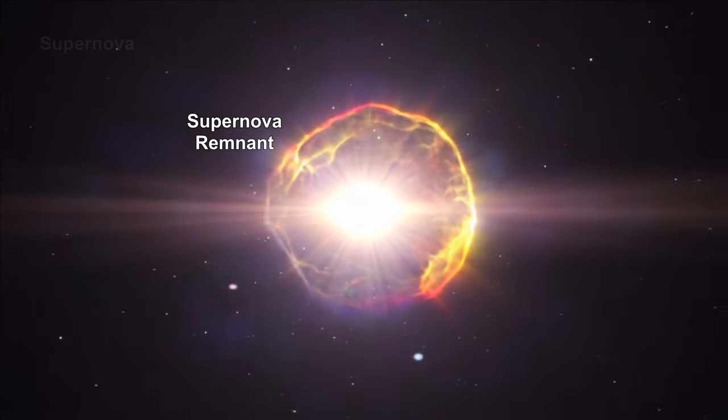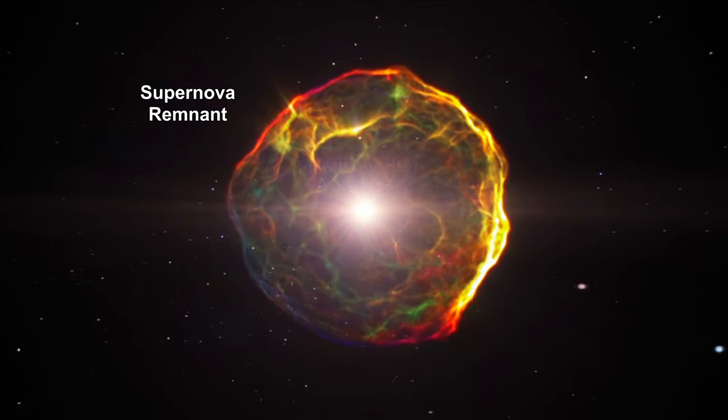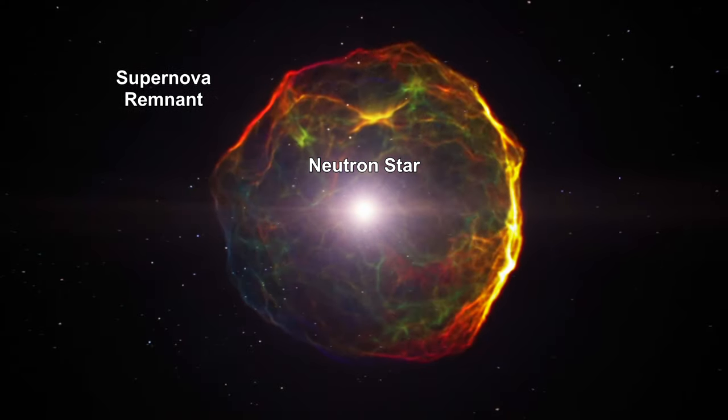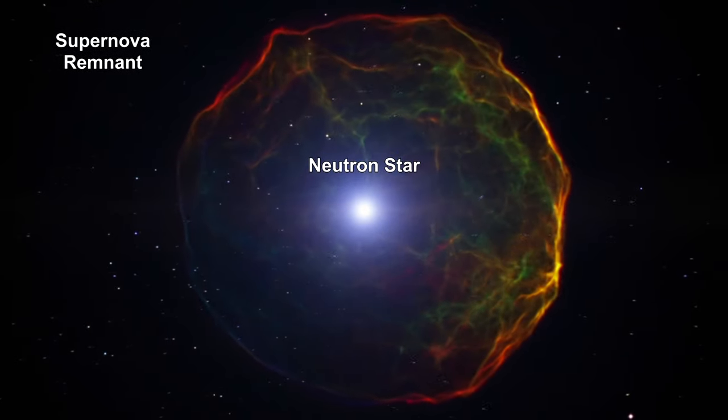Supernova explosions at the end of life of stars more than five times the mass of the Sun leave behind a neutron star. In these stars, electron exclusion pressure is insufficient to overcome the force of gravity, but neutron exclusion pressure is.